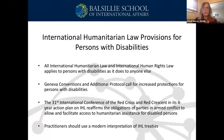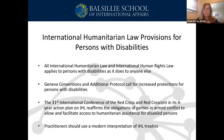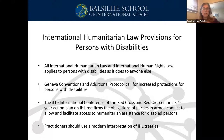People with disabilities have all of the same protections guaranteed under international humanitarian law as anyone without a disability, and there are also several references to people with disabilities in IHL. The Geneva Conventions and protocols call for special facilities for people with disabilities and special care for and evacuation of prisoners of war with disabilities. Several articles also call for the protection and accommodation of people with disabilities in transport and evacuation processes.